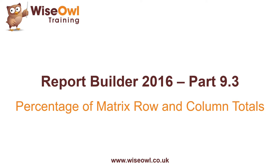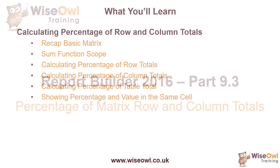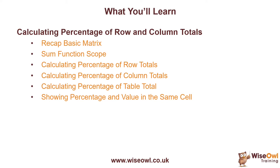Welcome to this Wise Owl Report Builder tutorial. In this video we'll explain how you can calculate the percentage of row and column totals in a matrix. We'll start with a quick recap of creating a basic matrix, including how to add row and column totals, then talk about the scope of the sum function and why it calculates different values depending on its location in a matrix. We'll then manipulate the scope to calculate the percentage of row totals, column totals, and the overall table total. The final part explains how you can show both the percentage of the total and the value in the same cell. So let's get started.